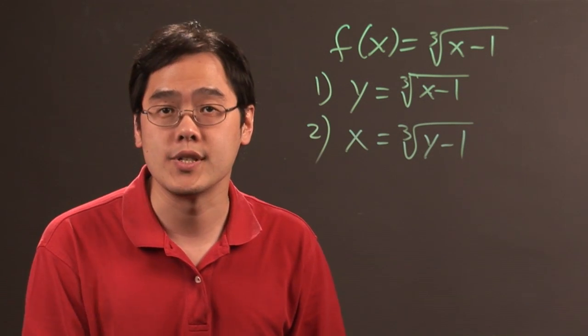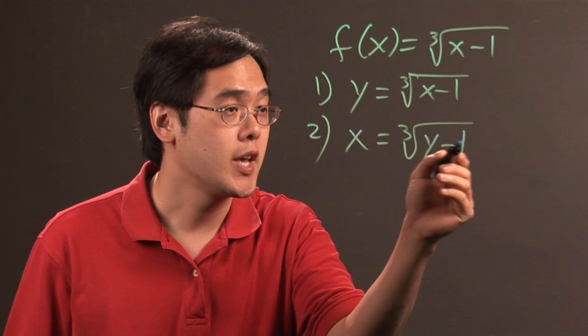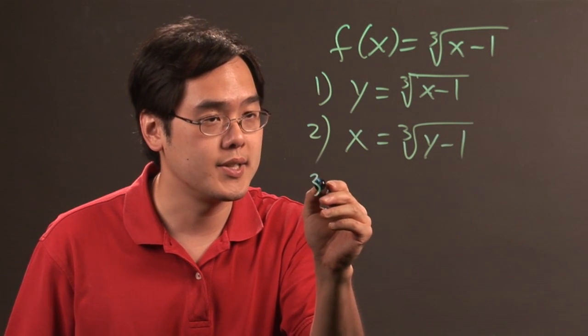What you want to do after this is solve for y. To get y by itself, you want to get rid of the radical, so you need to cube both sides.